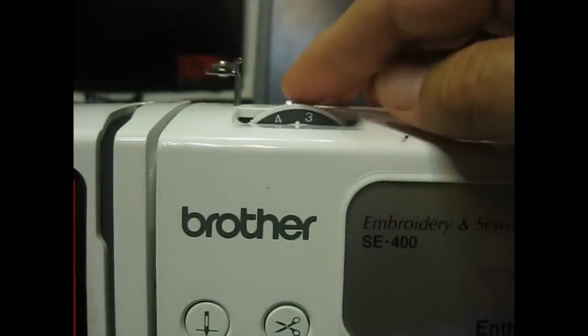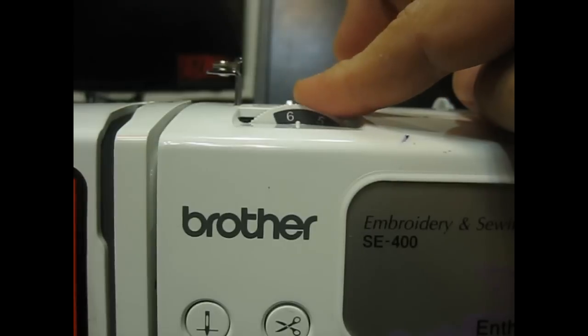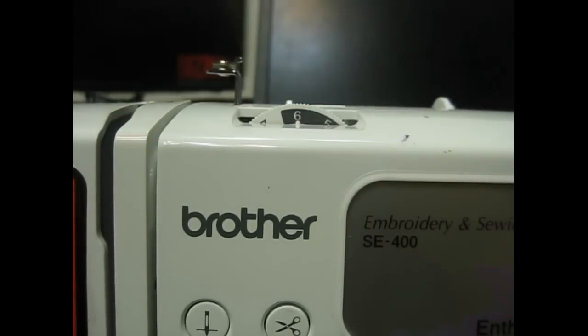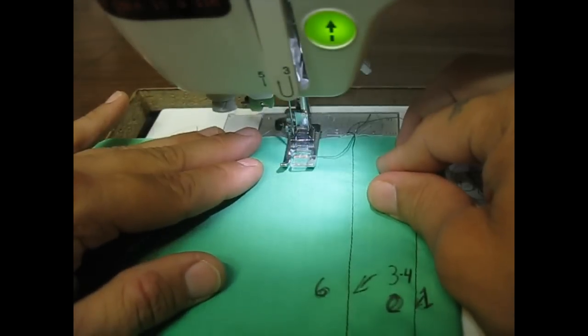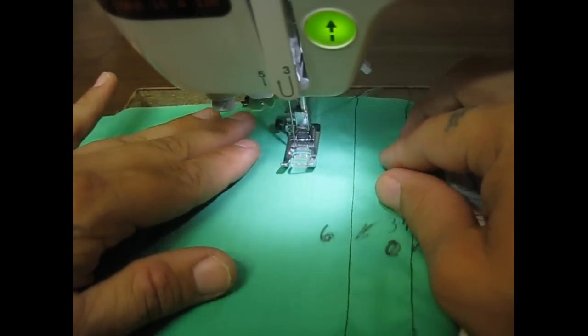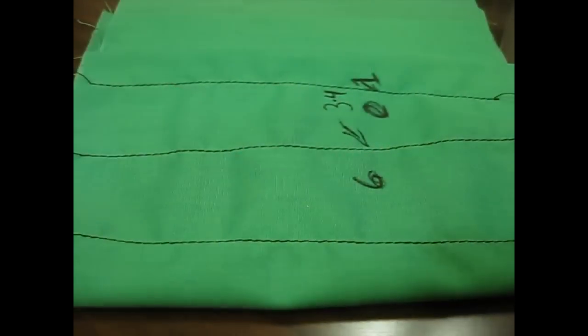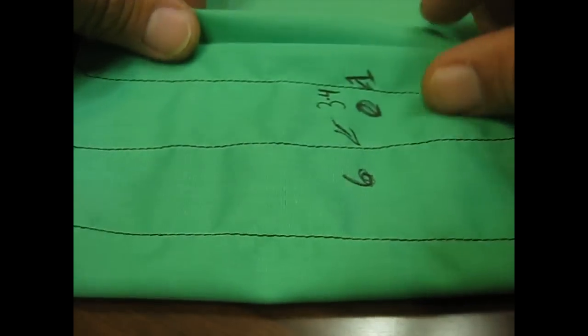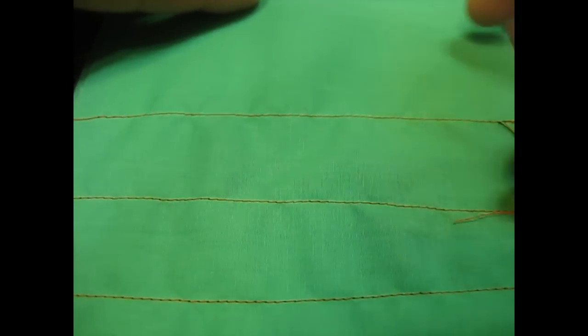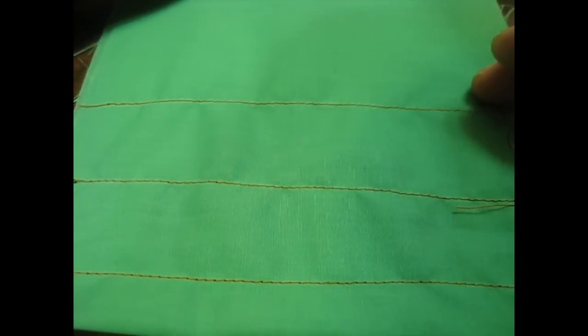Now what I'm going to do next is I'm going to ratchet it up to right around 6, which is the end of the comfort zone I think if you're just using regular material that you're sewing with. And you'll be able to see here that you're still not going to get a ton of difference.